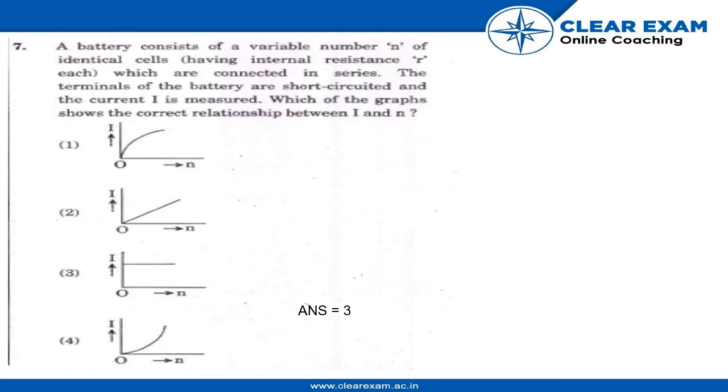Hello guys, we have a question here that says a battery consists of a variable number n of identical cells having internal resistance r each, which are connected in series. The terminals of the battery are short-circuited and the current is measured. Which of the graphs shows the correct relationship between i and n?